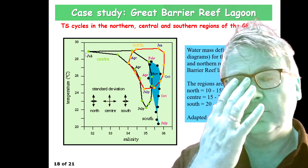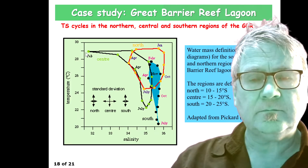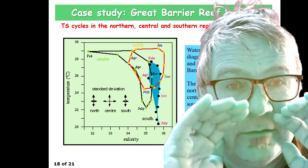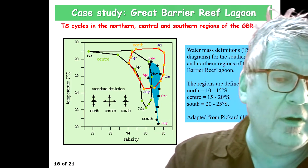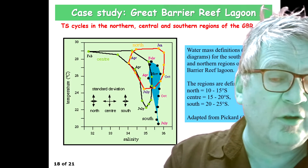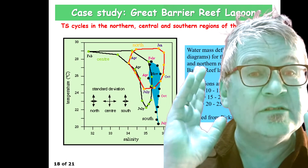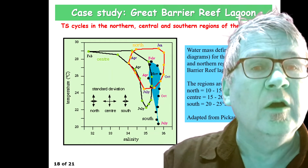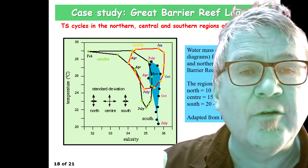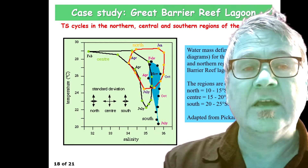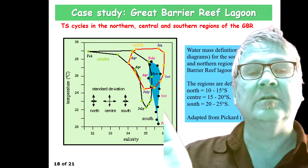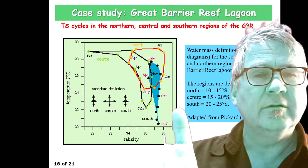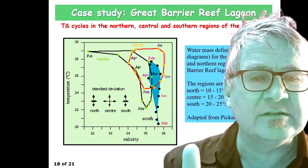Why is that? There is a clear spike in low salinity — around 32 or less. Where does that come from? It must come from rivers — what else could cause it?